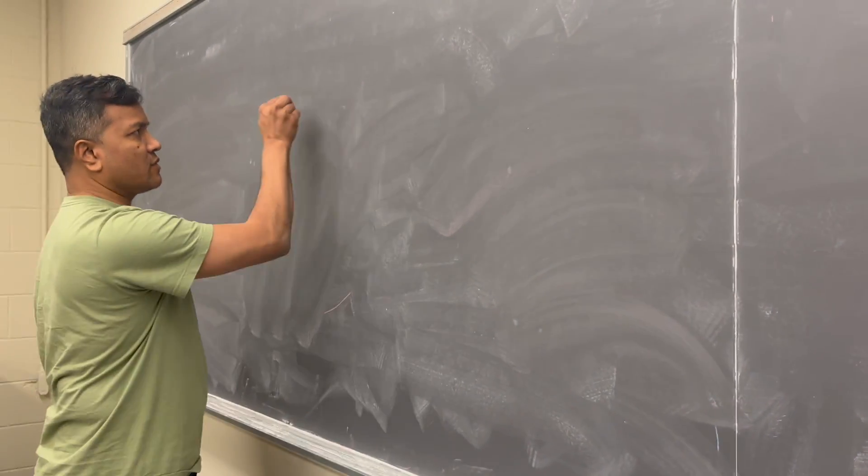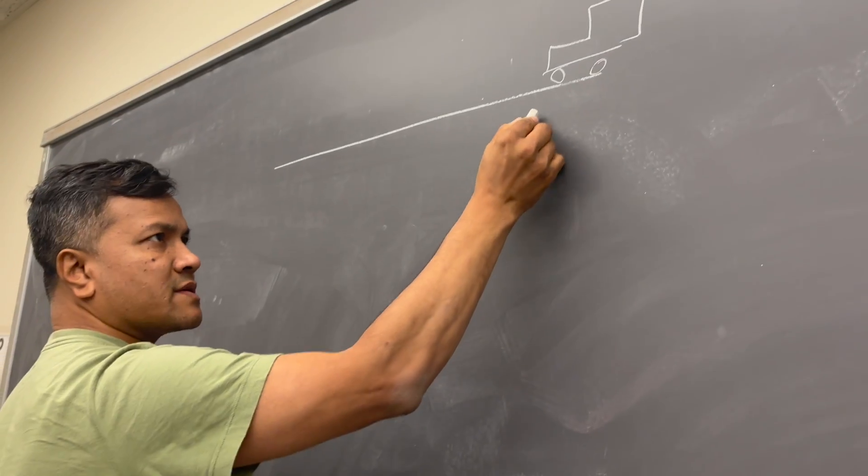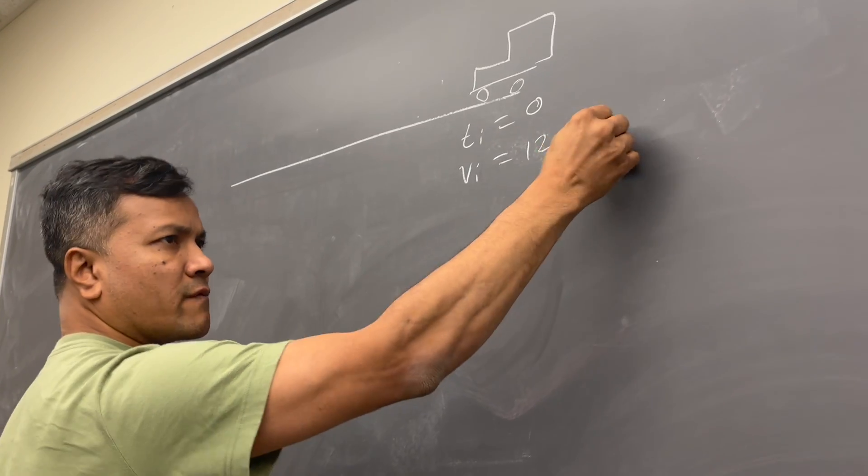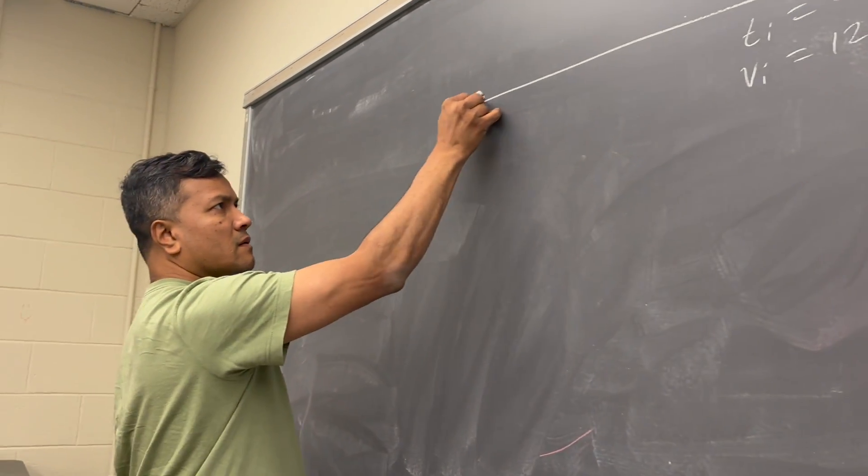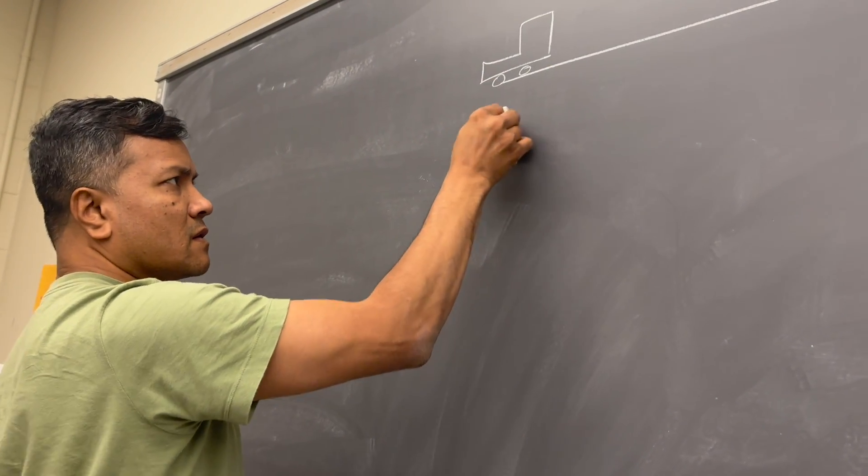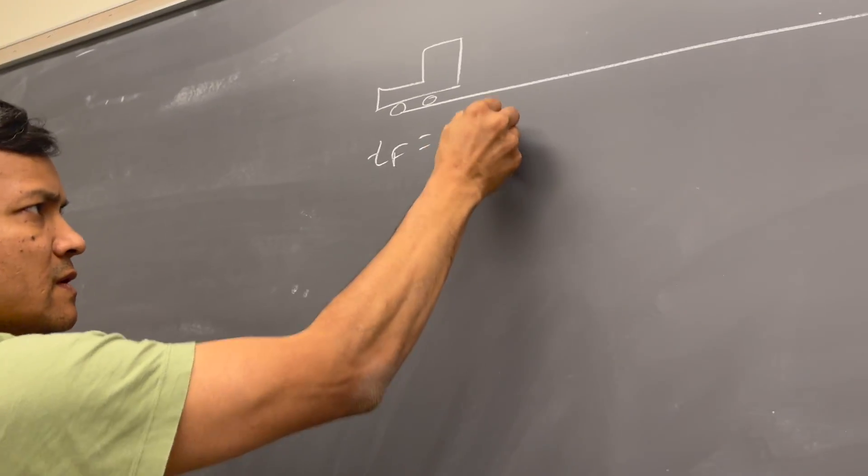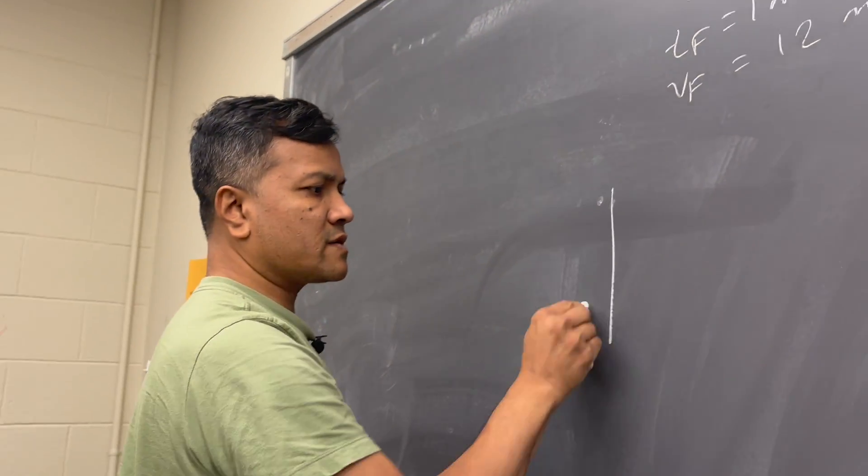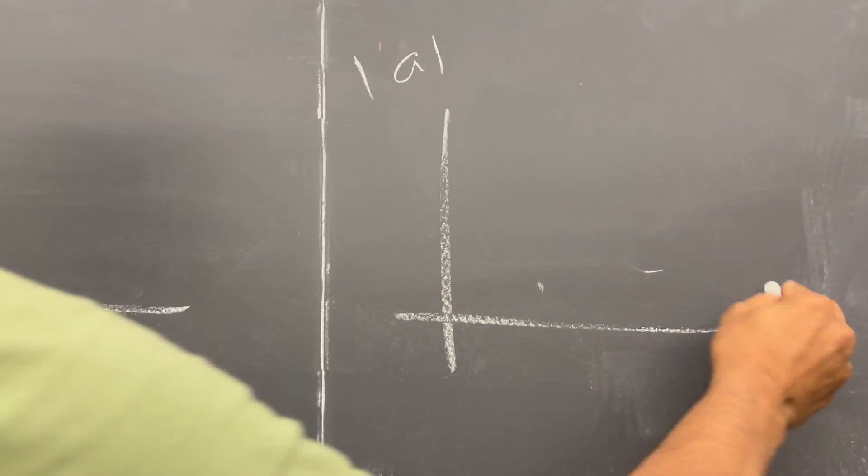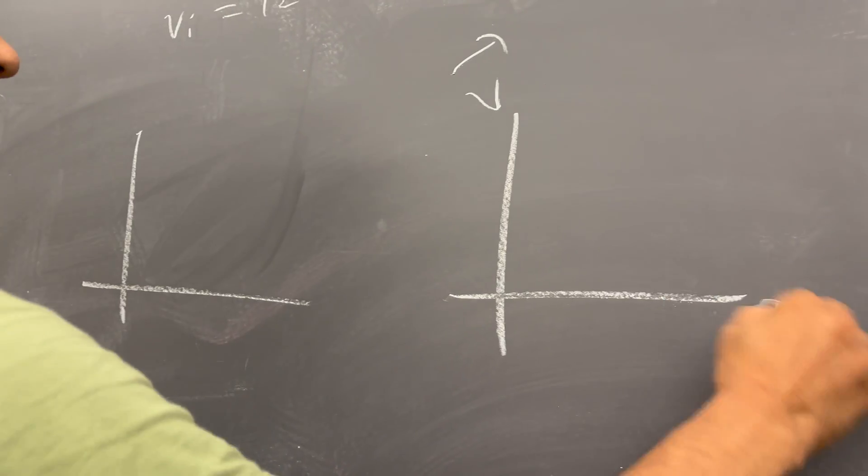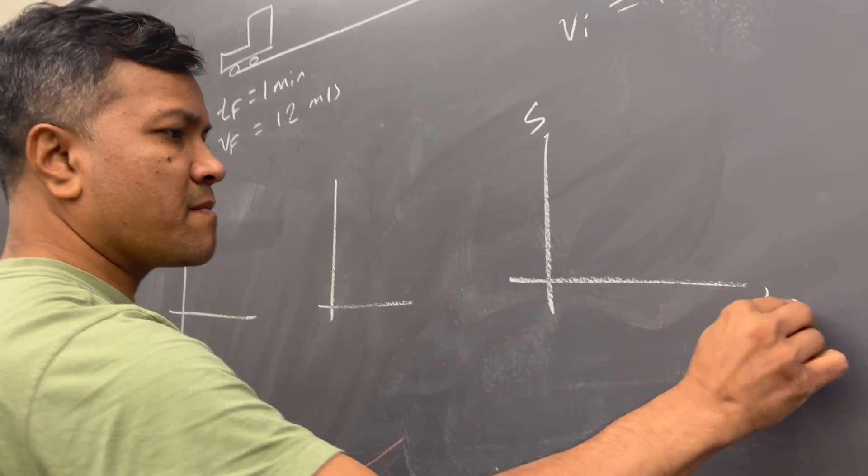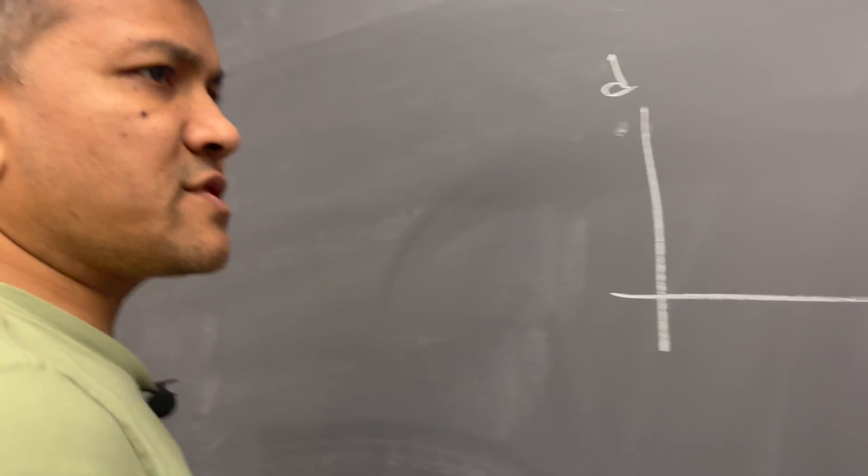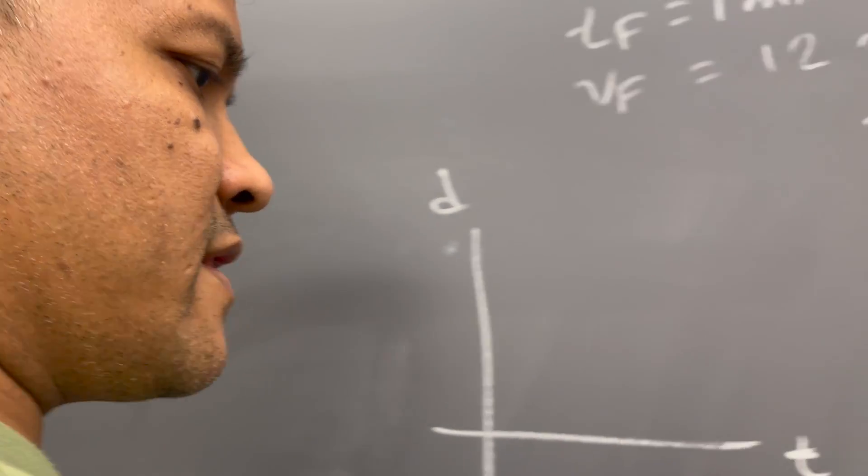The quiz one - what did I give you? If you remember correctly, initial velocity, t initial is zero, v initial 12 meters per second, t final one minute, and v final is still 12 meters per second. What did I ask you to do? I gave you six graphs: acceleration versus time, this is speed versus time, this is displacement versus time. I asked you to draw the graph and write their equations.